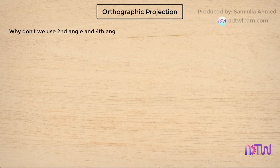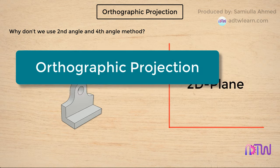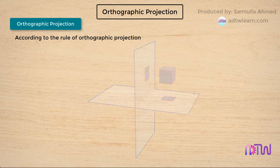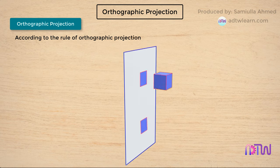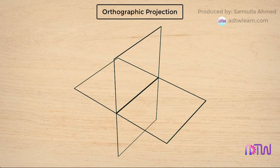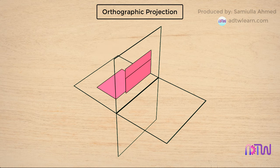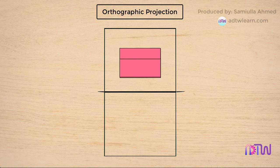It is not possible to show a 3D view of an object on a 2D plane, which is why we use orthographic projection. According to the rule of orthographic projection, the horizontal plane needs to be rotated in the clockwise direction. In the second angle view, the object is placed in the second quadrant with the plane between the object and the viewer. When the horizontal plane is rotated clockwise, the top view projected on it overlaps with the front view on the vertical plane. A similar problem occurs with the fourth quadrant, which is why we do not use the second and fourth angle methods.